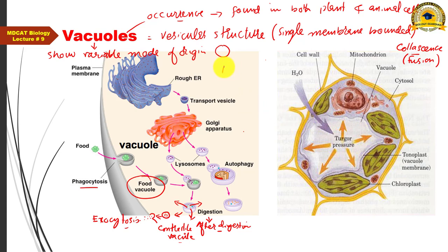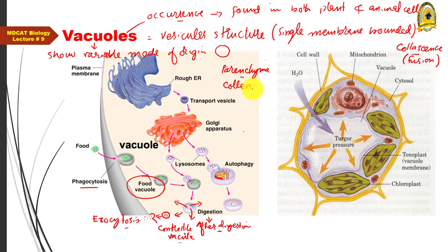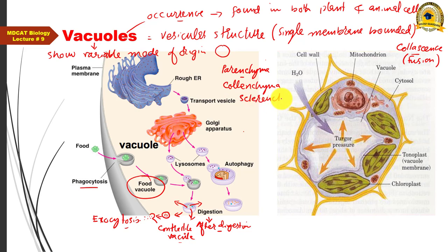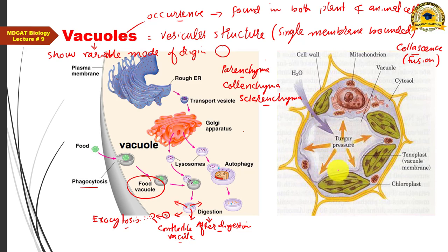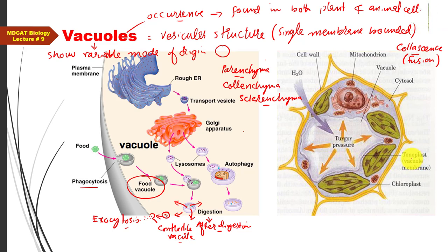Among the three types of plant cells, parenchyma (thin-walled cells) contains the large central vacuole. Collenchyma does not have a very large vacuole, and sclerenchyma — which are dead cells — has no vacuole at all because their cytoplasm has completely disintegrated. So the large central vacuole is mainly found in parenchyma-type cells.